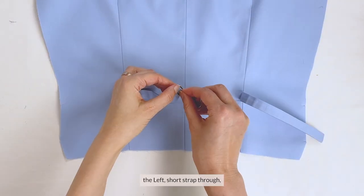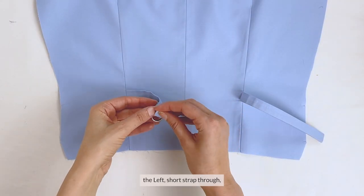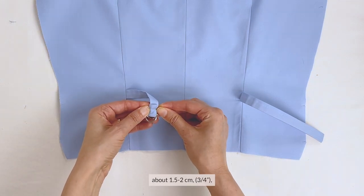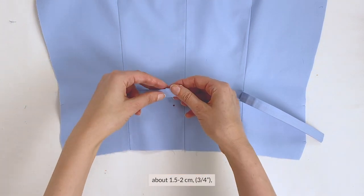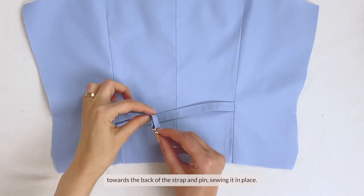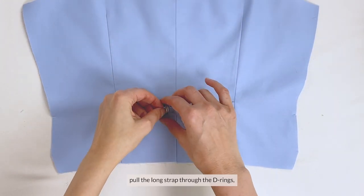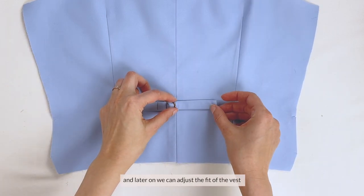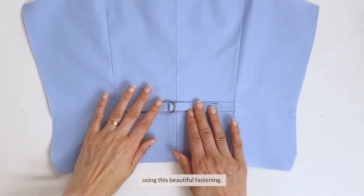Take your d-rings, and pull the left short strap through, and then fold the end of the strap, about 1.5-2cm, or ¾ of an inch, towards the back of the strap and pin, sewing it in place. After sewing, pull the long strap through the d-rings, and later on we can adjust the fit of the vest, using this beautiful fastening.